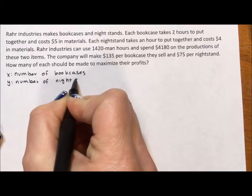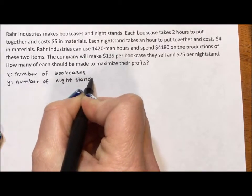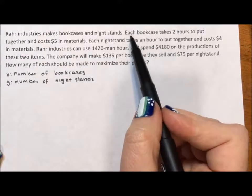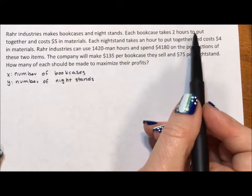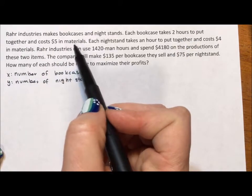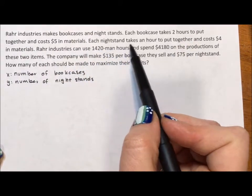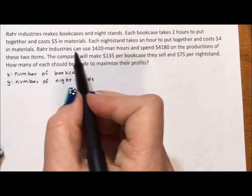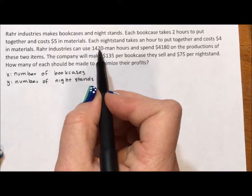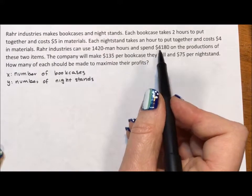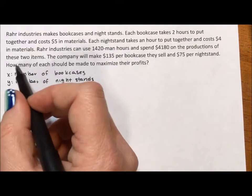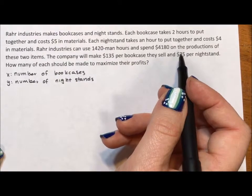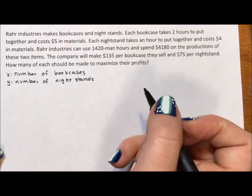Usually I would suggest reading through a problem before you start doing any notes, but I happen to have read through this one. Each bookcase takes two hours to put together and costs five dollars in material. Each nightstand takes an hour to put together and costs four dollars in materials. Raw Industries can use 1420 man hours and spend $4180 on the production of these two items. The company will make $135 per bookcase and $75 per nightstand.